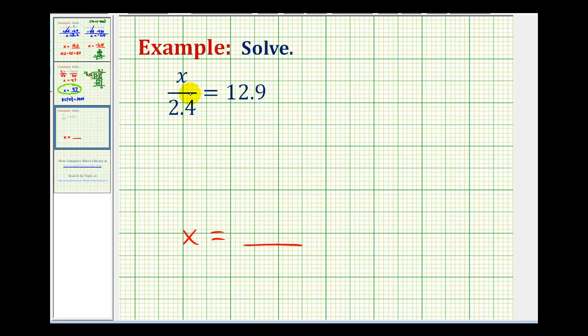Well, the opposite operation of dividing by 2.4 would be to multiply by 2.4. So we can isolate the variable by multiplying both sides of the equation by 2.4.